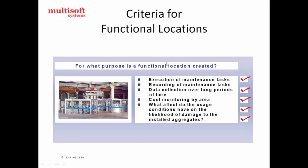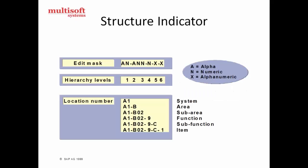Here are some criteria for functional locations with a business scenario example. The criteria include: execution of maintenance tasks, recording of maintenance tasks, data collection over long periods of time, cost monitoring by area — meaning by functional location — and understanding what effect usage conditions have on the likelihood of damage to the installed aggregates.